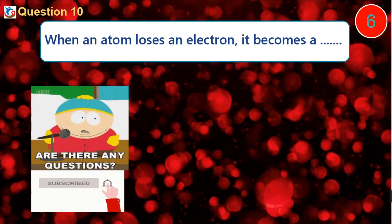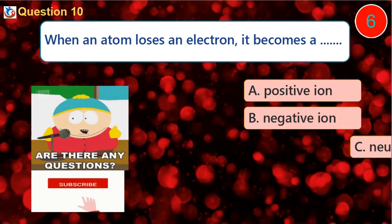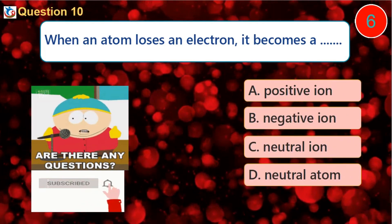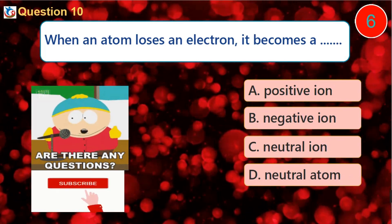Question 10. When an atom loses an electron, it becomes a: A. Positive ion B. Negative ion C. Neutral ion D. Neutral atom